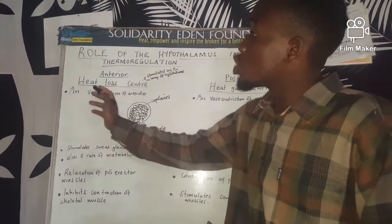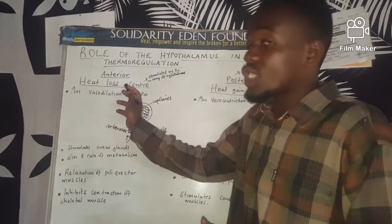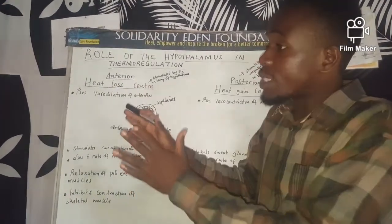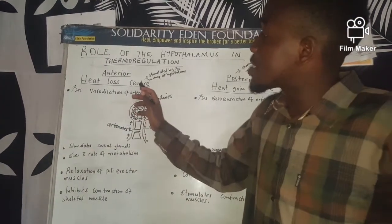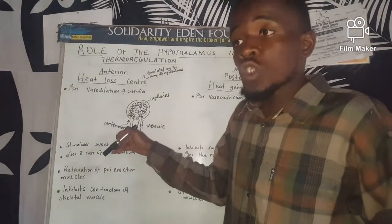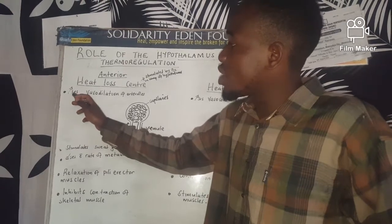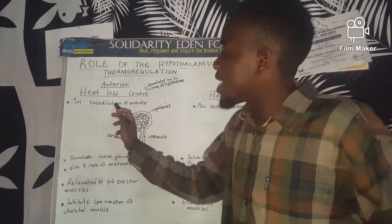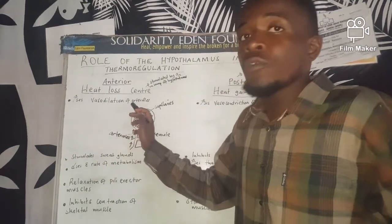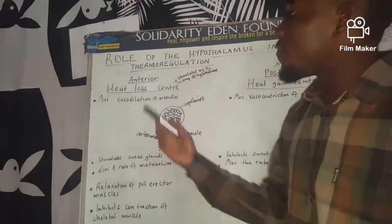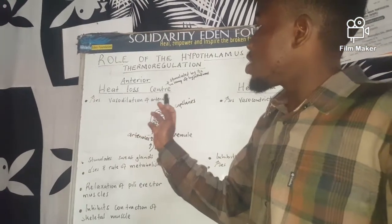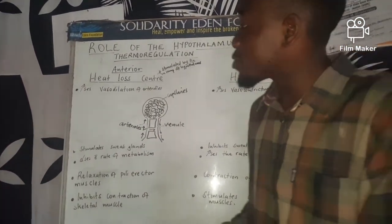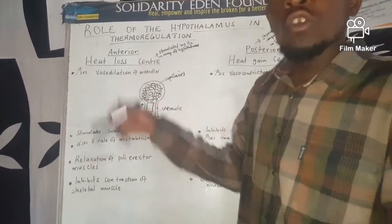When the heat loss center is stimulated, it acts to bring about loss of heat, and the loss of heat stabilizes the temperature back to normal. One response is an increase in the rate of vasodilation of the arterioles in the skin, causing vasodilation in the skin to increase.